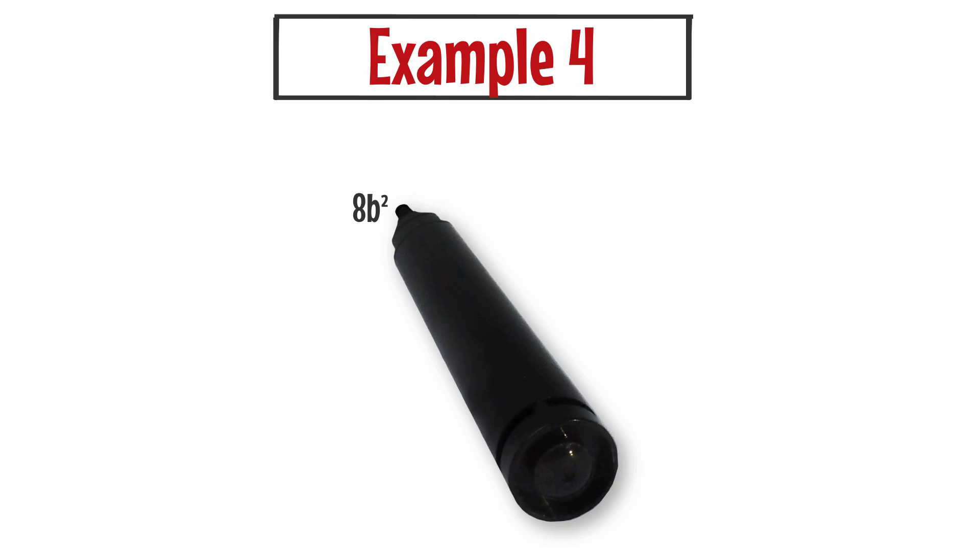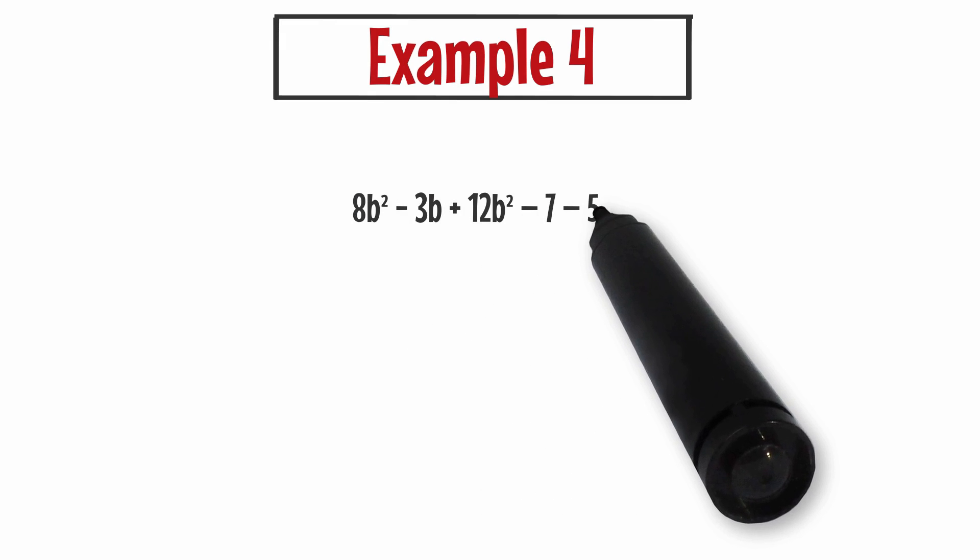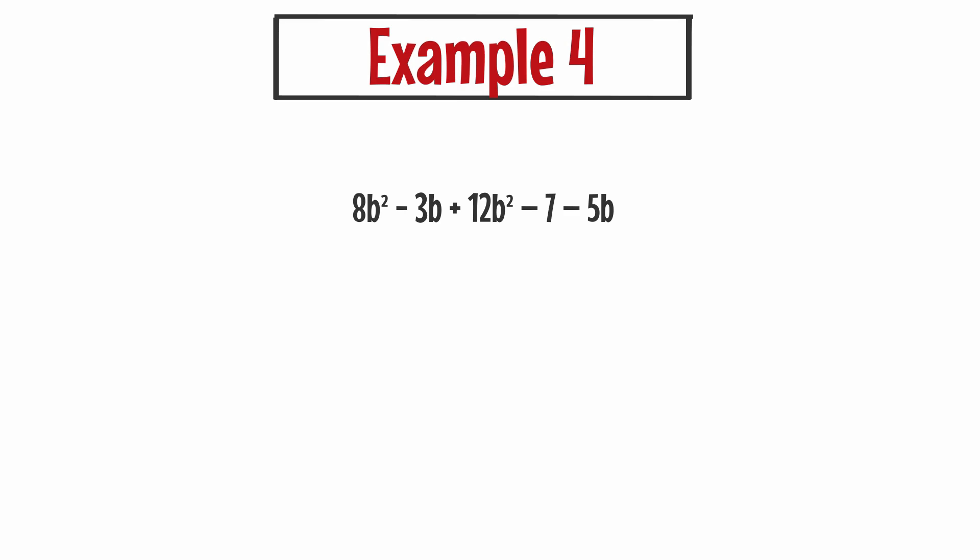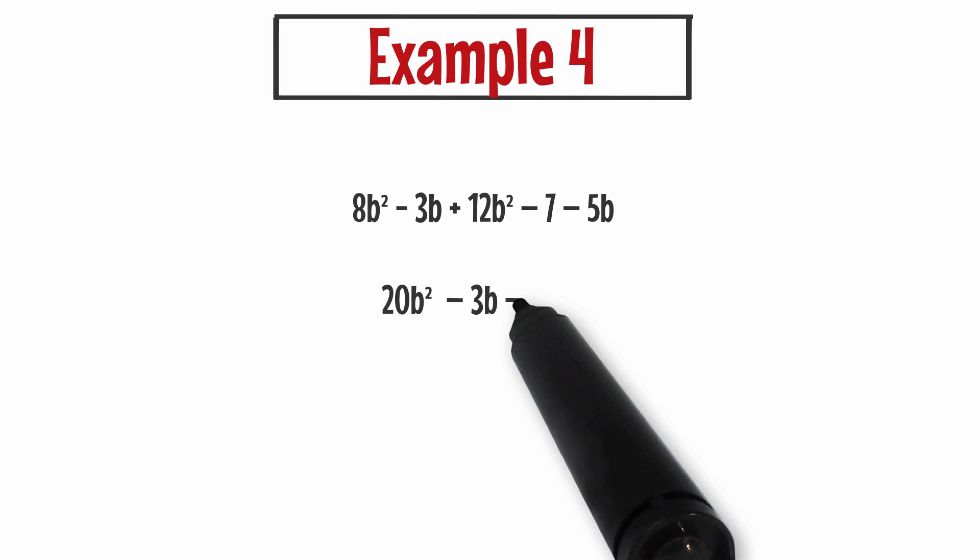Example number four. Let's say I have the expression 8b squared minus 3b plus 12b squared minus 7 minus 5b. My b's stand for bananas and my b squared stand for super bananas. I cannot combine a b with a b squared because they're two different things. I have 8b squared and I need to add 12b squared to it. 8 plus 12 is 20, so I have 20b squared, or 20 super bananas.